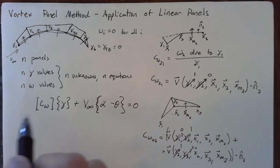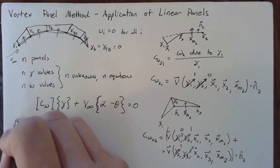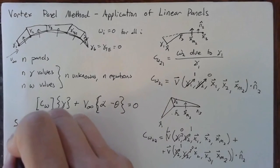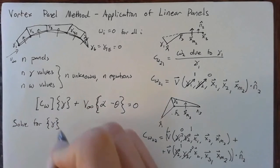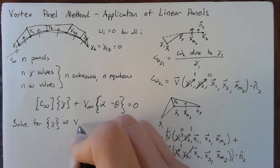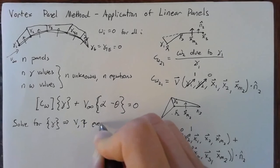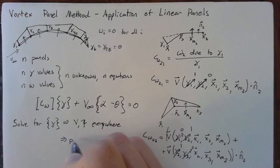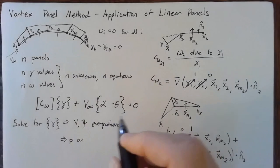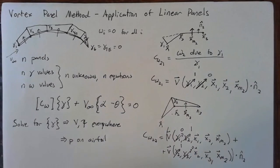So once we have our CWs, we're going to follow the same set of steps. We're going to solve for gamma, or for all of our gamma values. Once we have that, we can find velocity and stream function everywhere. Once we have that, we can find the pressure on panel on our actual airfoil. And then from there, we can solve for lift and the moment on the airfoil, which is usually everything that we're interested in with the vortex panel method.